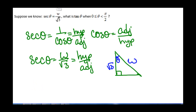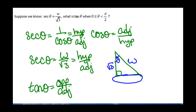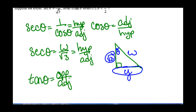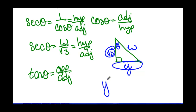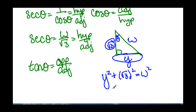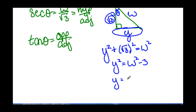We're looking for tangent of theta, which is opposite over adjacent. So we need to find the opposite side — we already know our adjacent side. If we call this opposite side y, then y squared plus the square root of 3 squared equals w squared by the Pythagorean Theorem. So y squared equals w squared minus 3, and y equals plus or minus the square root of w squared minus 3.